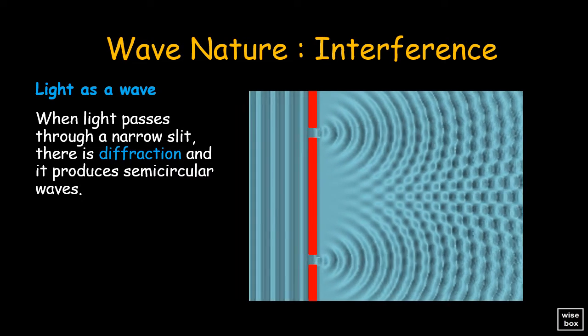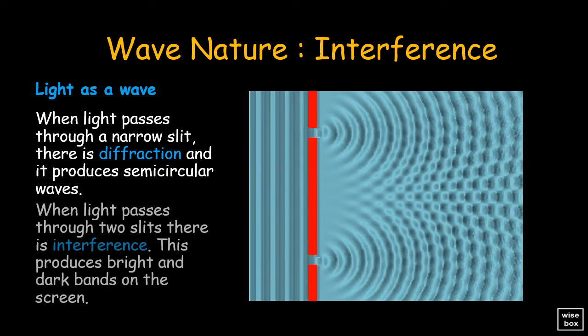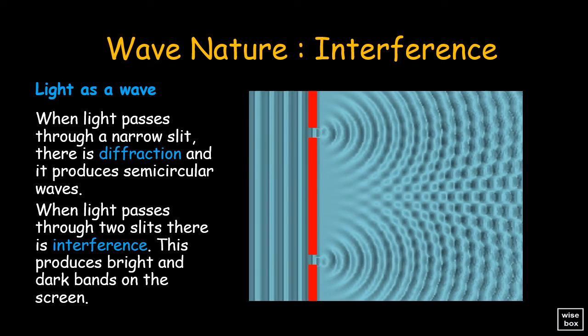Also, when the light waves pass through the two slits, there is interference, producing bright and dark bands on the screen. This is a result that would not be expected if light consisted only of particles.